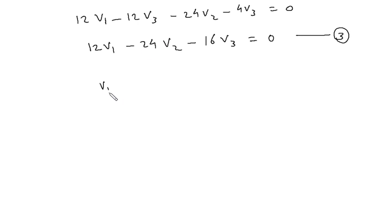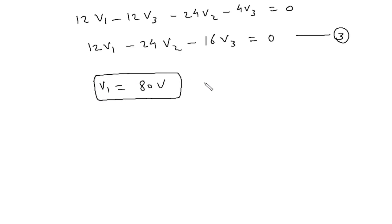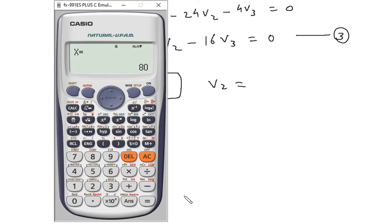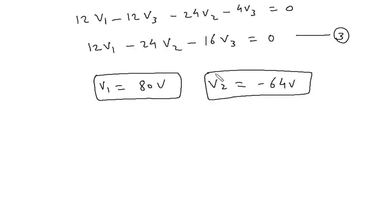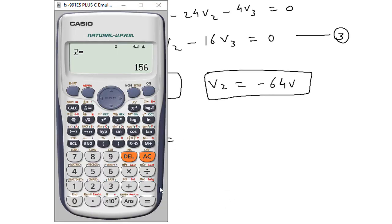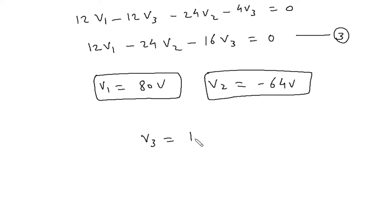Solving the system of equations, we get V1 equals 80 V, V2 equals minus 64 V, and V3 equals 156 V.